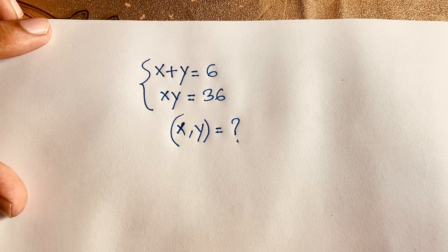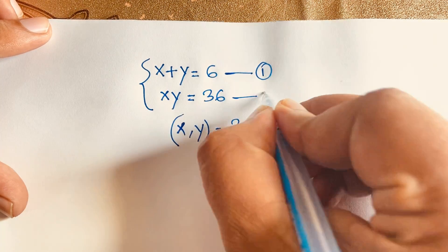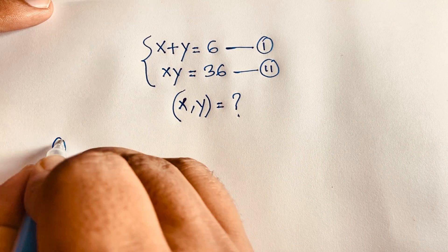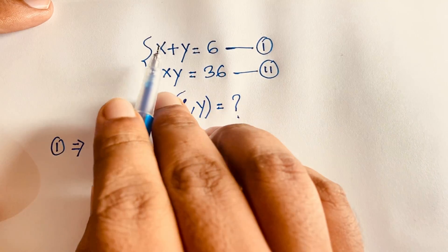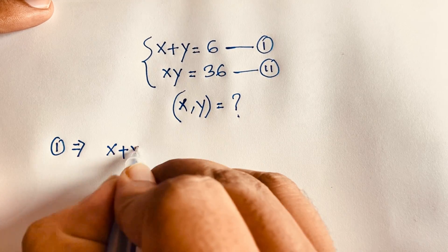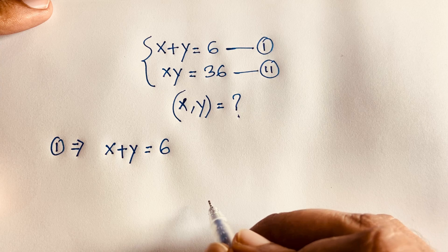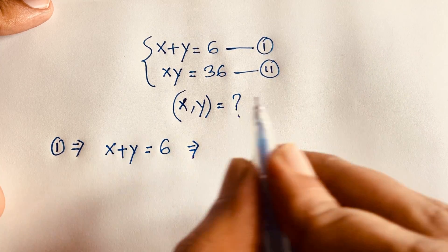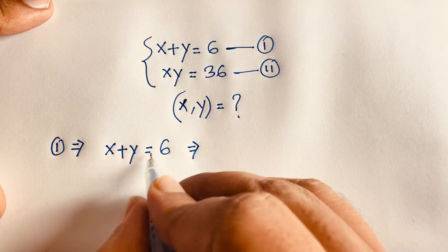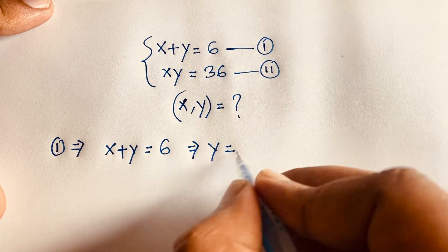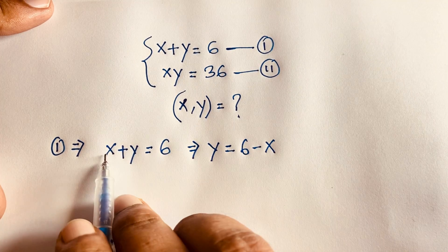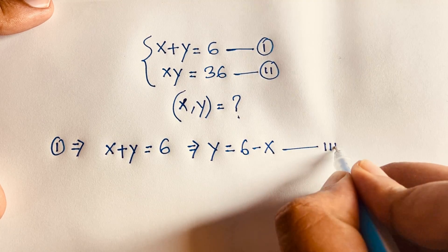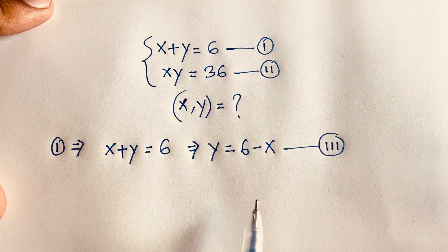So first of all, I can see this is our first equation and this is our second equation. If I take our first equation, x plus y is equal to 6, and I move x to the right side, it will be y equals 6 minus x. So we find out our third equation: y is equal to 6 minus x.